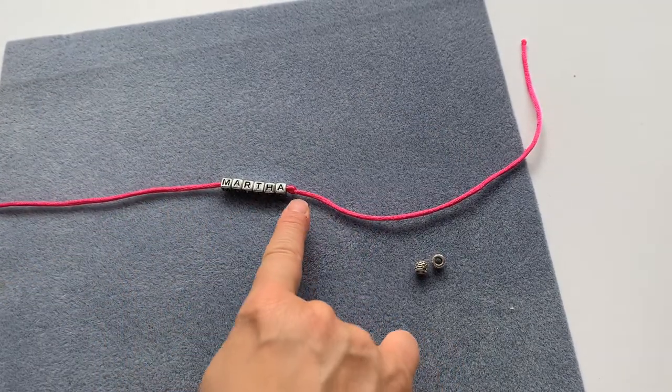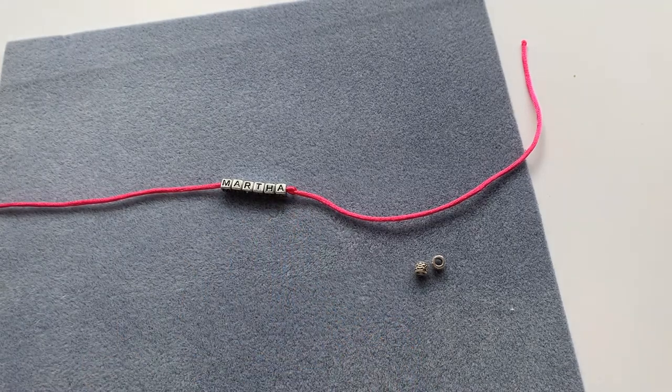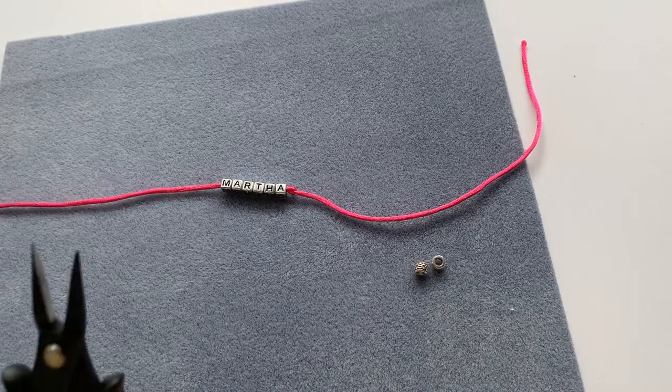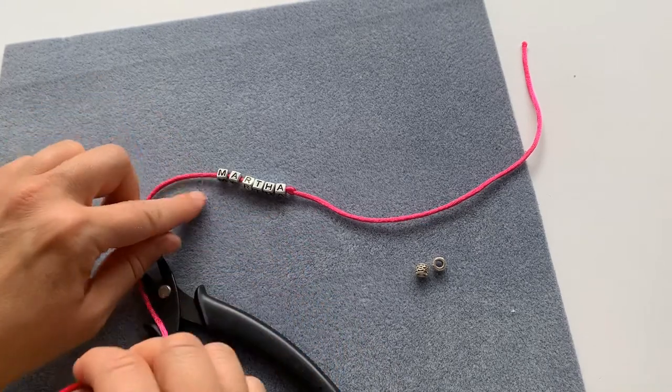And now I'm going to add a second knot. So to add the second knot I'm going to use my round nose pliers to make sure I can get the knot really tight close up.